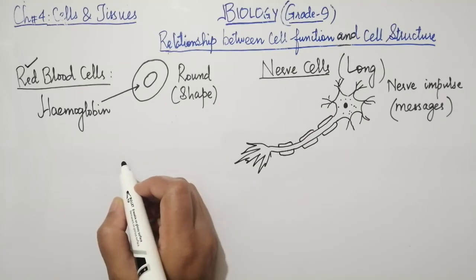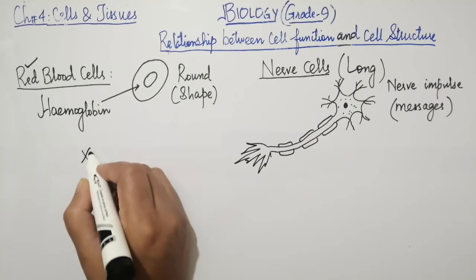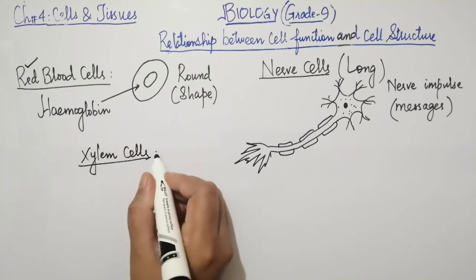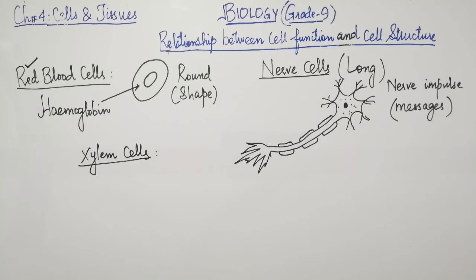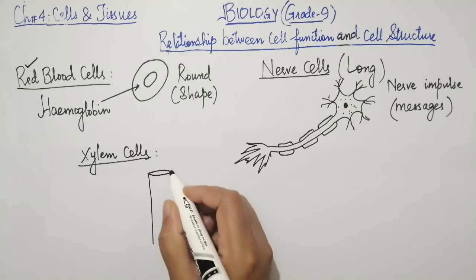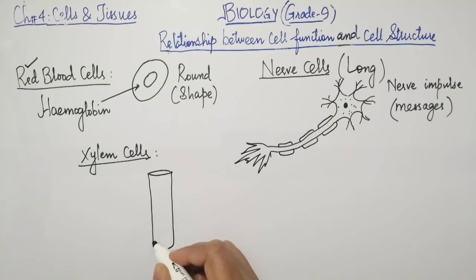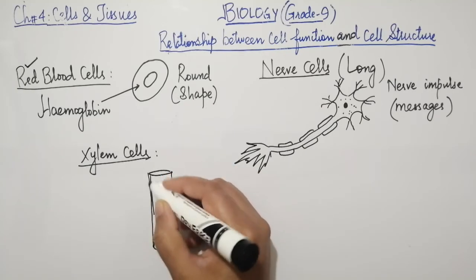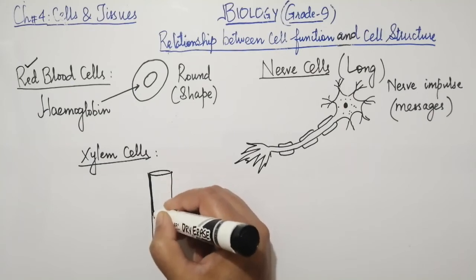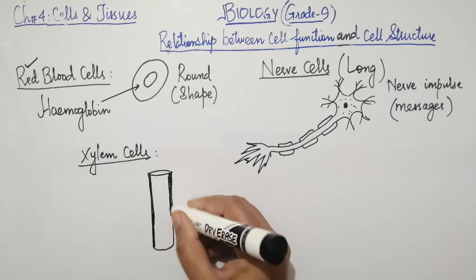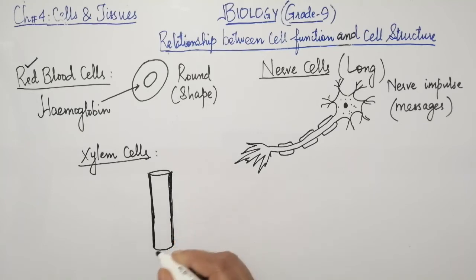Then we move to the third example, xylem cells, which are present mainly in vascular plants. Xylem cells are tube-like structures. These are pipe-like cells and the outer walls are very thick. I am drawing the outer wall. These walls are very thick.